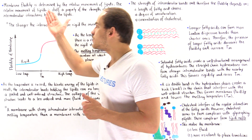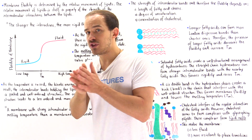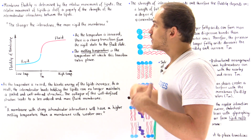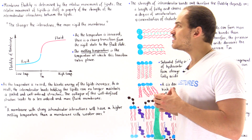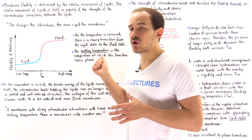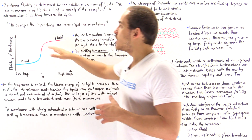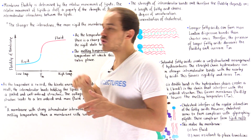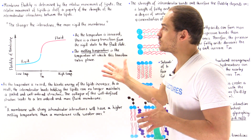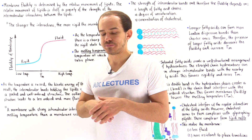The stronger the interactions between the molecules in the membrane — the stronger these intermolecular bonds are — the more rigid the membrane is. Conversely, the weaker the interactions are, the less rigid and more fluid that membrane actually is.